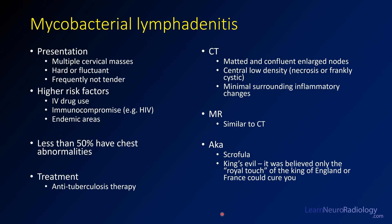This is a case of mycobacterial lymphadenitis. The case had multiple cervical masses, larger on the left. They can be hard or fluctuant and frequently don't have as much pain. Risk factors include IV drug use or being immunocompromised. Endemic areas such as Africa and India have more TB, so you can see it more commonly there. Less than 50% are going to have abnormalities in the chest, and the treatment is anti-TB therapy or antimycobacterial therapies.